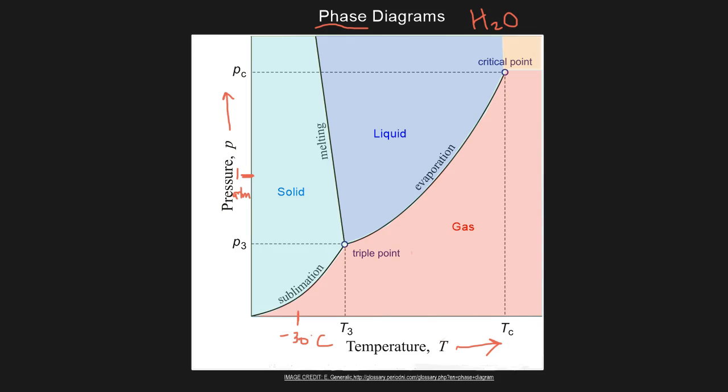So our atmospheric pressure is one atmosphere. This is not going to change, right? This is going to be constant, because we're at one location. We're not going to change elevation and change our pressure or do anything else weird that's going to change our atmospheric pressure. So this will stay constant. Our temperature will change. So we start out at negative 30 degrees Celsius, one atmospheric pressure. So we're right here, right in the ice phase.